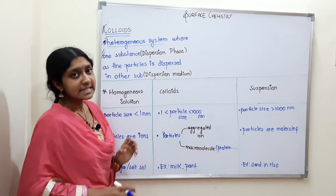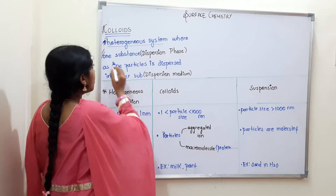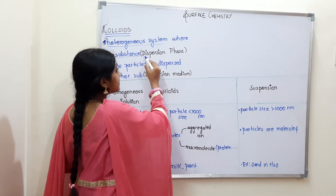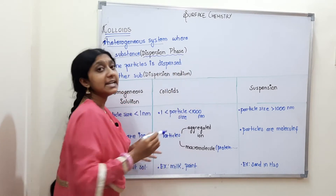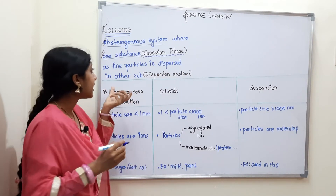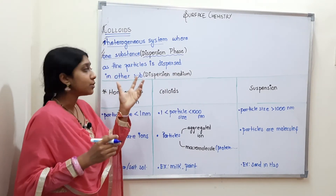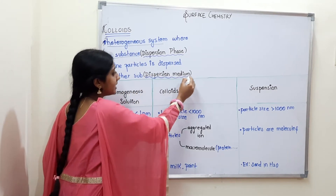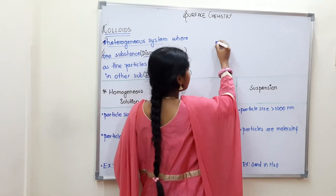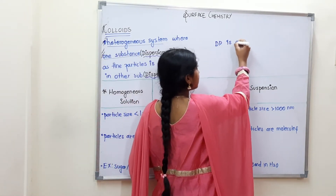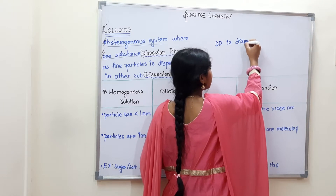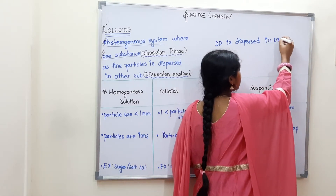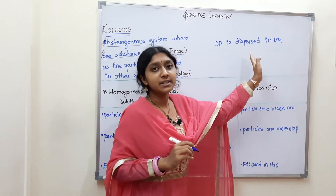In a heterogeneous system, one substance is called the dispersion phase — it consists of fine particles — and it is dispersed in another substance called the dispersion medium. So, dispersion phase is dispersed in dispersion medium. This is colloids.